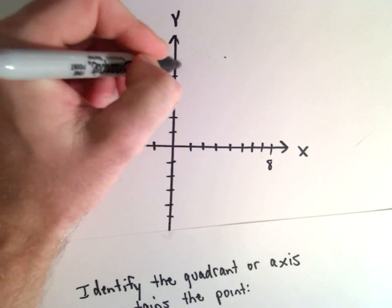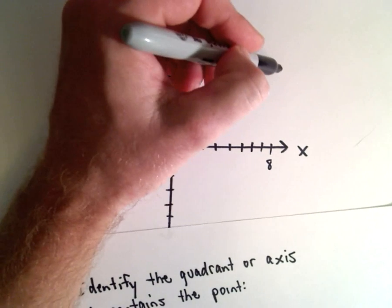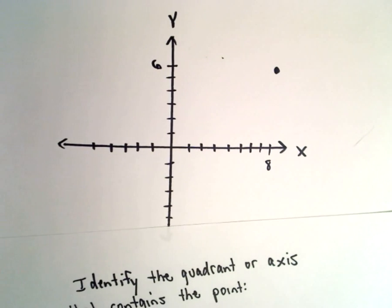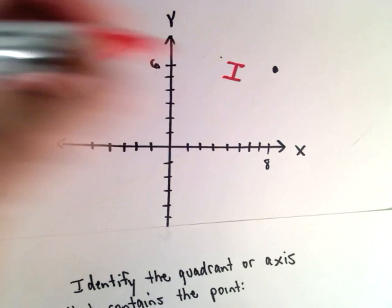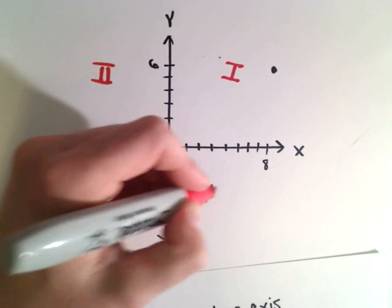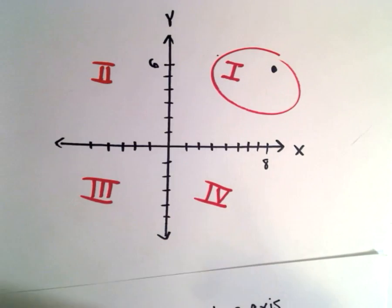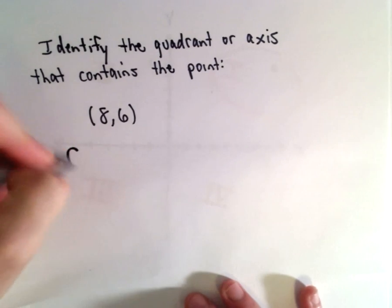And 1, 2, 3, 4, 5, 6 units on the y-axis, and we'll put our point right there. So our point in this case is going to be in Quadrant 1. Just to remind you: this is Quadrant 1, Quadrant 2, Quadrant 3, and Quadrant 4. So our point here will belong to Quadrant 1.